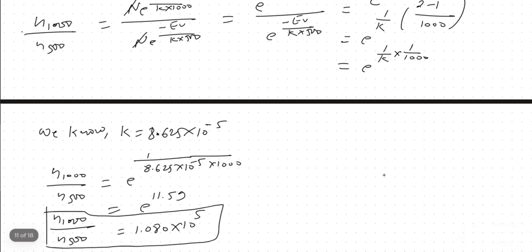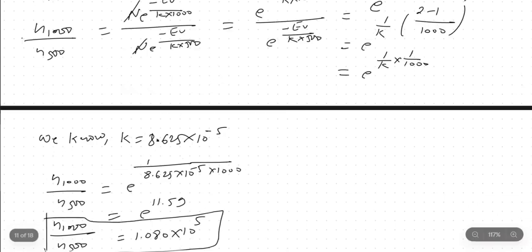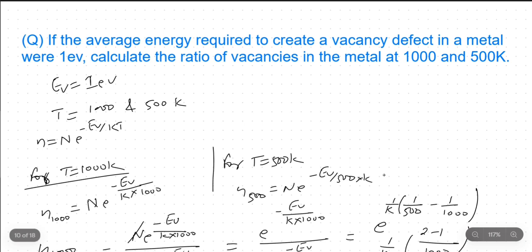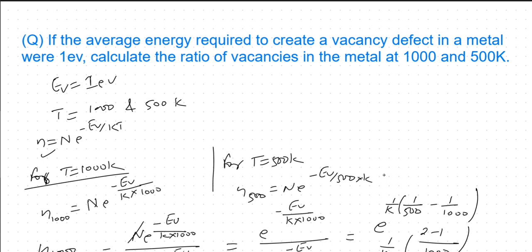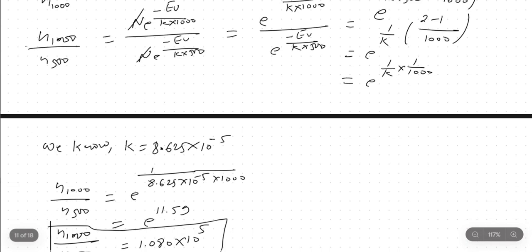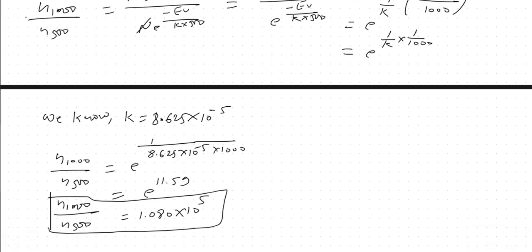This is an example of a numerical problem relating to vacancy defect in a crystal. In examinations, they might give you equations like this and ask you to find the required value. Sometimes they give you small n and other data to find capital N, or they give small n, capital N, and kT to find E_V. You just have to use this formula and do the necessary mathematical calculation. I hope you understood this numerical problem — it was a very easy one. Thank you for watching the video.